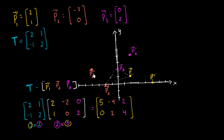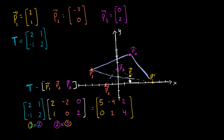Something interesting has happened. We now have the vertices of another triangle — a new triangle that looks something like this. We went from that smaller triangle to the larger one. Or another way you could think of it, this entire triangle was transformed. Right now we only transformed the vertices, but it actually turns out — I'm not proving it in this video — that if you took any of the points on this triangle, it would have transformed to a corresponding point on this larger triangle.